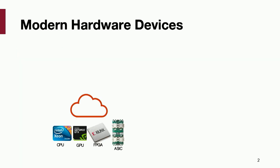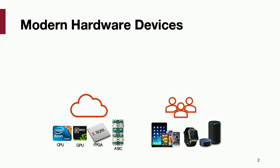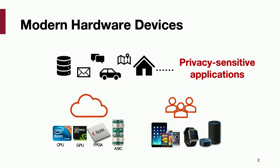I'm going to talk about hardware security. Nowadays, we have many different hardware devices. For example, in the cloud, we have CPU, GPU, FPGAs, and ASICs. We also have personal devices like smartwatches, mobile devices, and smart home devices. On top of all these devices, we are running privacy-sensitive applications — your laptop is processing personal messages, and smart home cameras are taking videos of your home.